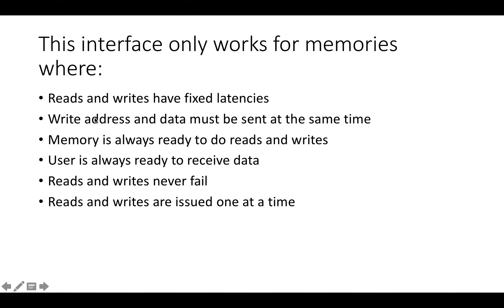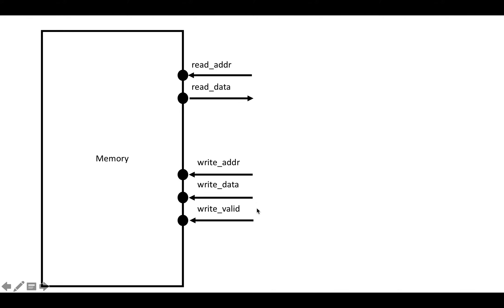Another limitation is that the write address and data have to be sent at the same time. For reads there's only one piece of input, but for writes there are two — the address and the data — and we assume that when write valid is set to one, both the write address and write data are simultaneously set. There's no way to send the write address first and then the write data later, or vice versa.